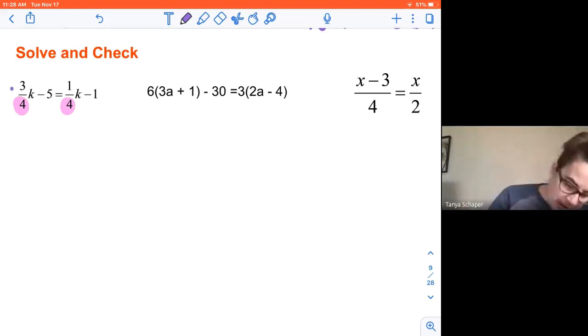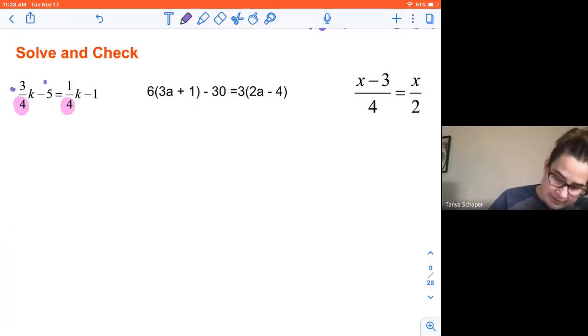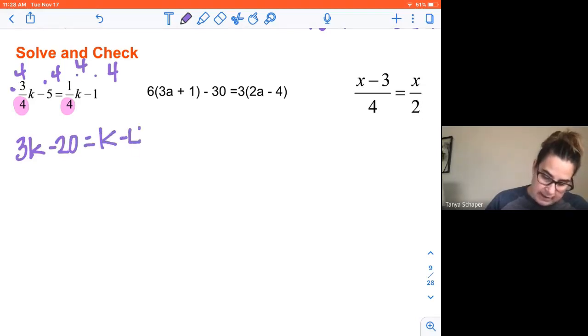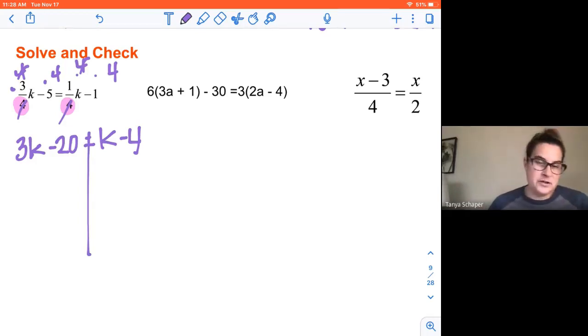So I'm going to multiply each of these by four. My pen is not working incredibly well, so I'm just going to have to use my finger. So I'm going to multiply each of these by four. And when I do that, I'm going to end up with 3K minus 20 equals K minus 4 because my denominators are cancelled out. Three fourths times four is three.